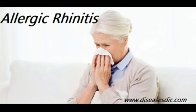Pathophysiology. Allergic rhinitis involves inflammation of the mucous membranes of the nose, eyes, eustachian tubes, middle ear, sinuses, and pharynx. The nose is invariably involved, and the other organs are affected in certain individuals.